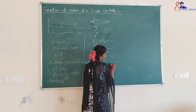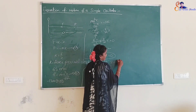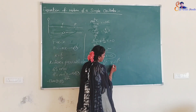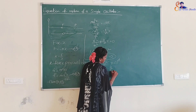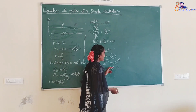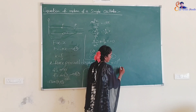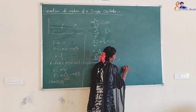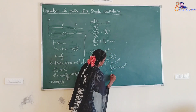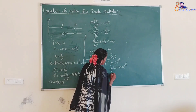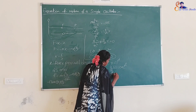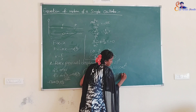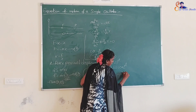We assume x = C·e^(αt) as a trial solution. Differentiating with respect to t: dx/dt = C·α·e^(αt), where C is a constant. Differentiating again: d²x/dt² = C·α²·e^(αt).